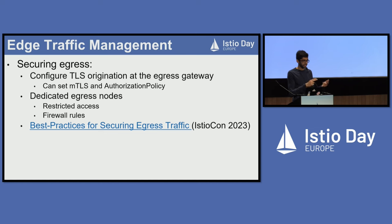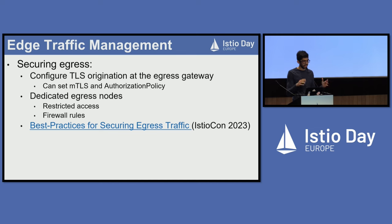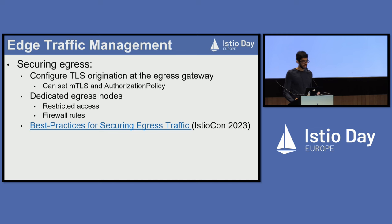Another piece of advice is to perform TLS origination at the egress gateway and have MTLS set between your sidecars and gateways in your destination rules, as opposed to originating HTTPS traffic from the applications directly. The advantage here is that you can then target the egress gateway with authorization policies and have even more fine-grained control of your outbound traffic. It's also best practice to have the egress gateway deployed onto its own dedicated node pool, and then have cloud firewall rules to block any requests that aren't routed through the egress gateway nodes.